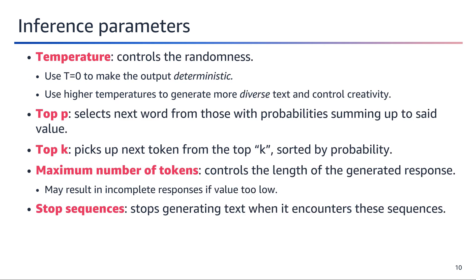The temperature parameter controls the randomness or diversity in the generated text output. A temperature of zero makes the output completely deterministic, while higher temperature values introduce more randomness, leading to more diverse and creative responses. A temperature of zero will cause the model to generate the same response for a given prompt in each run. Increasing the temperature allows the model's generation to sample other tokens with higher probability. A very high temperature makes responses highly diverse and creative, but may increase the likelihood of hallucinations.